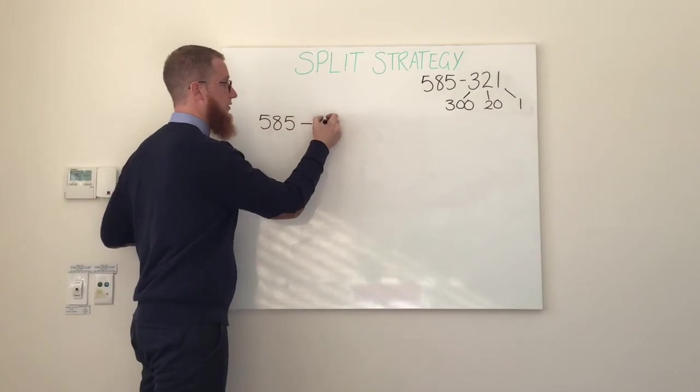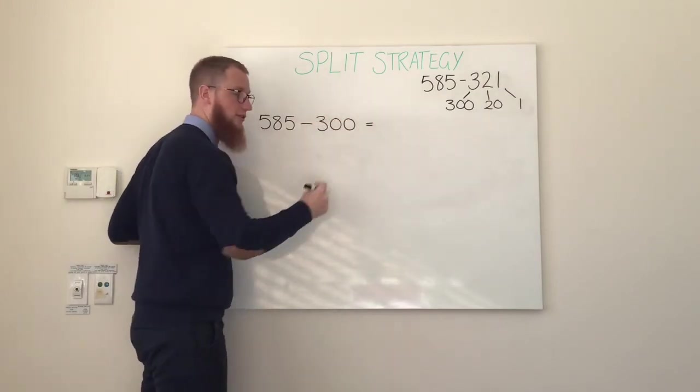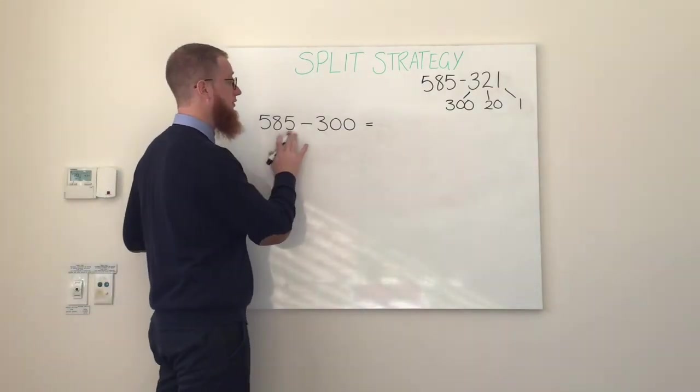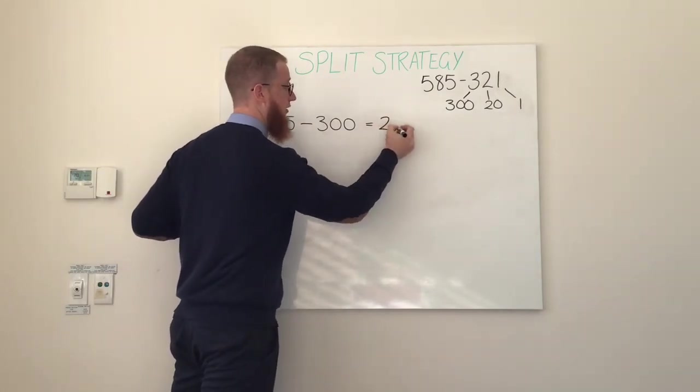585 minus 300. Now we know that if we are taking away hundreds we are just dealing with the hundreds value or the value in the hundreds position. 585 minus 300 leaves us with 285.